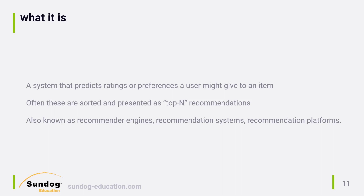Often these will be sorted and presented as what we call top-N recommendations. So we're not necessarily recommending a specific rating or preference for an item — we might just be recommending a list of items that somebody might like. These are also known as recommender engines, recommendation systems, and recommendation platforms. It's all the same thing.